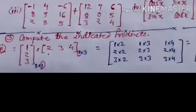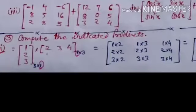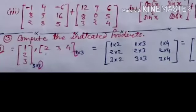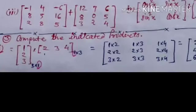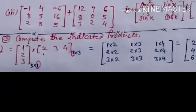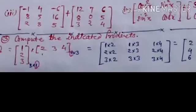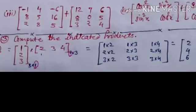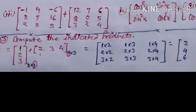This is the second part. Here the first matrix is a column matrix [1; 2; 3] and the second matrix is a row matrix [2, 3, 4]. The order of the first matrix is 3 by 1 and the order of the second matrix is 1 by 3. The number of columns of the first matrix equals the number of rows of the second matrix, so the order of the resultant matrix is 3 by 3.